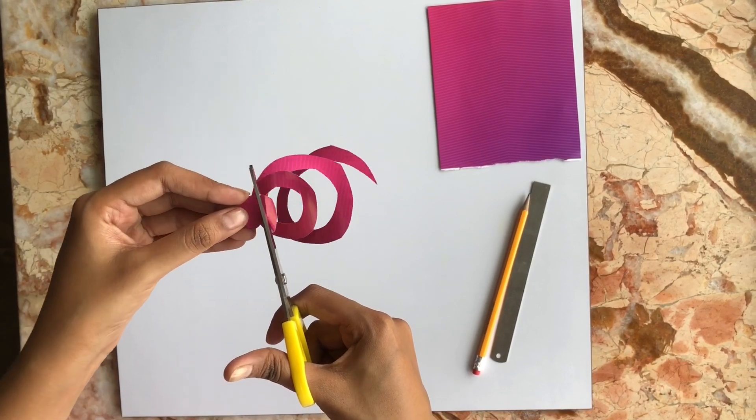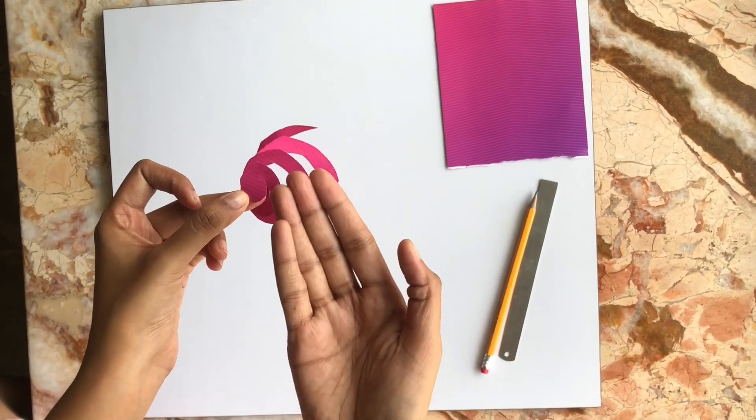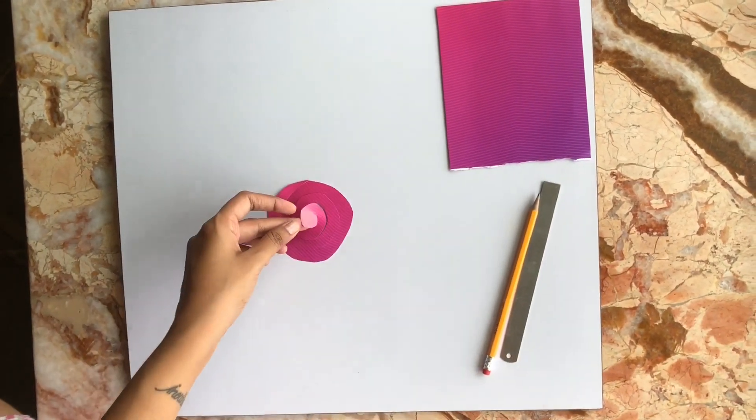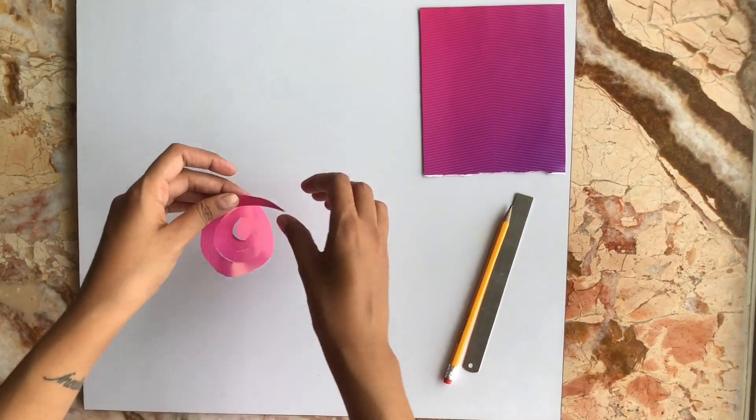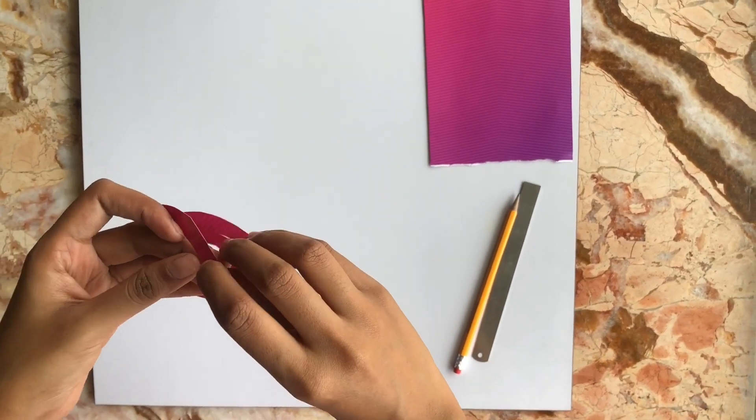Be sure to stop a little before you reach the end because this part will form the base of the bud. Now to make the bud, we slowly start rolling from this edge of the cut out circle.